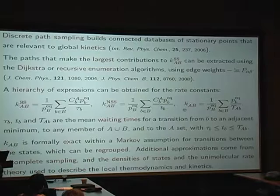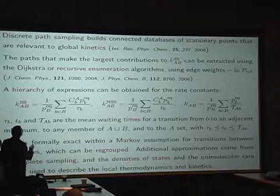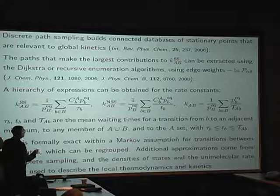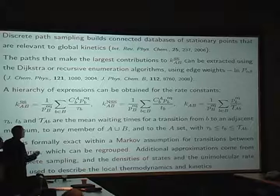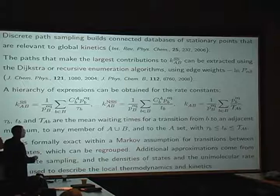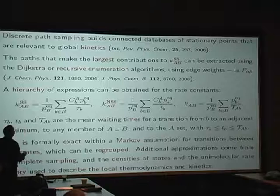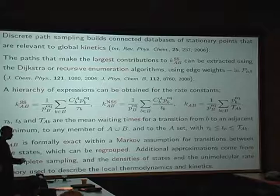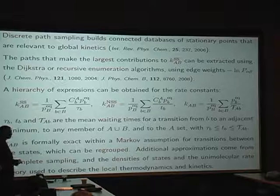So just a few more words. Discrete path sampling is basically growing a database using geometry optimization from minima and transition states. And we can pick out the pathways that make the largest contributions to the steady state rate constant. There are all sorts of tricks you can now use from graph theory or nice algorithms at work here. You need appropriate edge weights for your graph, which become minus log of the branching probability, because that will then reconstruct that product in the sum for you. And you can make hierarchies of expressions depending upon how accurately you would like these things and which approximations you want to put in. And I should say that I've assumed a Markov assumption here for all the transitions. We can regroup the database using free energy thresholds if you tell me a temperature. And I can work out some approximate densities of states.